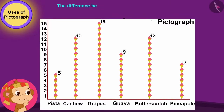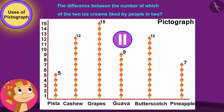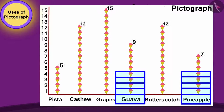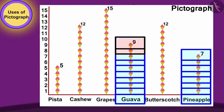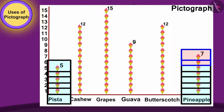Children, can you tell the difference between the number of people liking which two ice creams is two? The guava line has two ice cream symbols more than the pineapple line, and pineapple's line has two ice cream symbols more than pista ice cream's line. So, the difference between the number of people who like guava and pineapple, and pineapple and pista ice cream, is two.